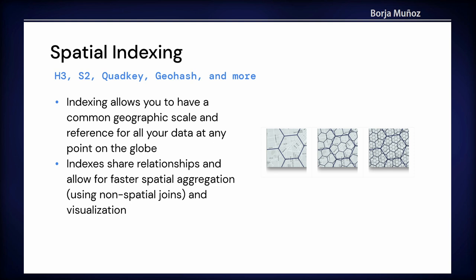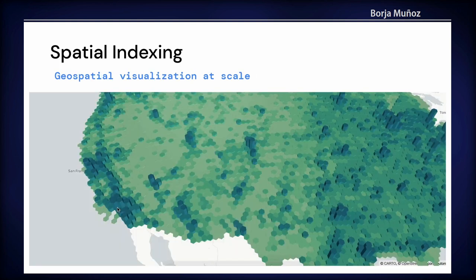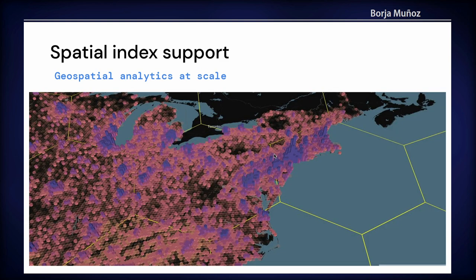When we mix that with SQL, it means that spatial joins now become regular joins. The database engines — the data warehouse engines — are really fast at doing intersections using integers or strings. So it becomes manageable. If we also mix it with tiling schemes, we can smoothly visualize datasets where you have billions of features, or do spatial analysis at scale.